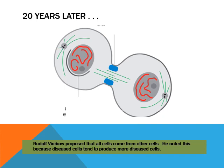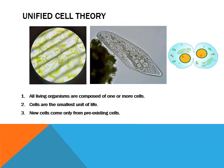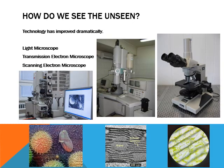Between the three of them — Schleiden, Schwann, and Virchow — they built what we know as cell theory. The light microscope was super cool for its time. For 200 years, and in fact it's still pretty cool — we still use it. There are some other microscopes that have come into play recently.